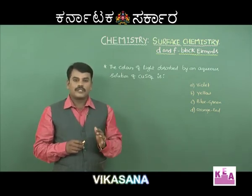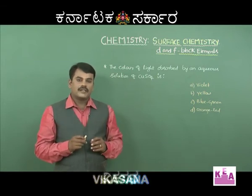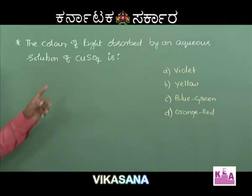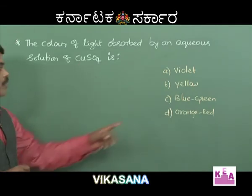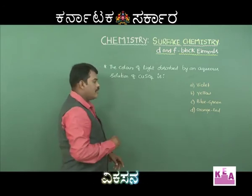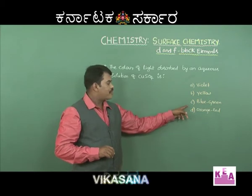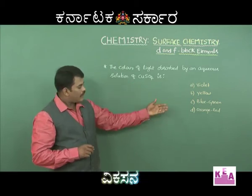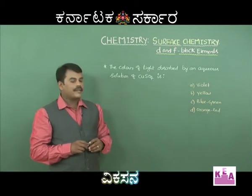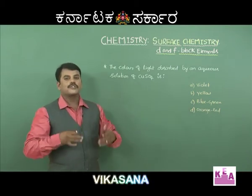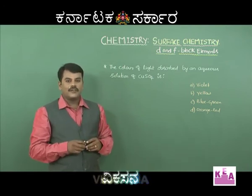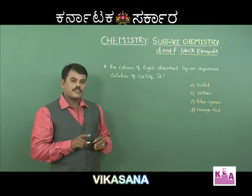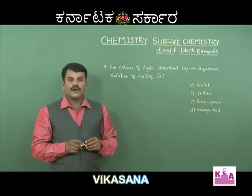Whatever color is absorbed by the solution from visible white light, the complementary of that color will be shown by the compound. Copper sulfate solution looks blue-green in color because it absorbs orange-red. Orange-red is complementary to blue-green. The compound always exhibits the complementary of the color of the light which has been absorbed.